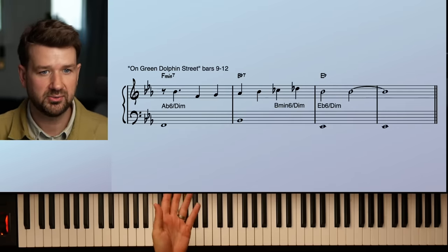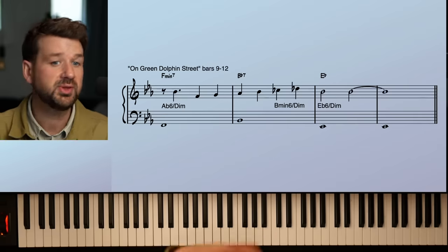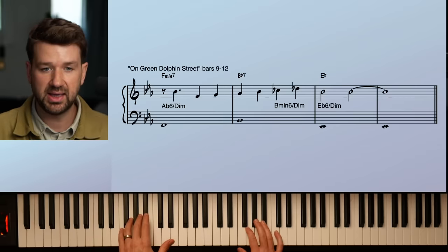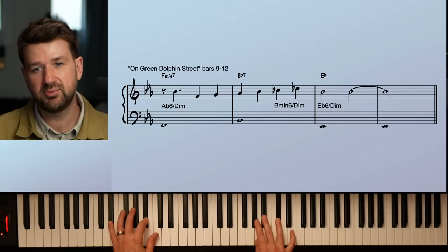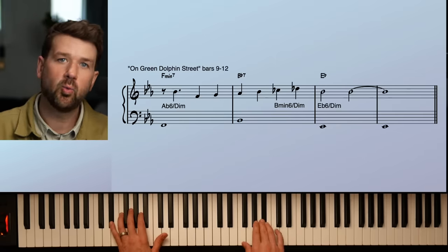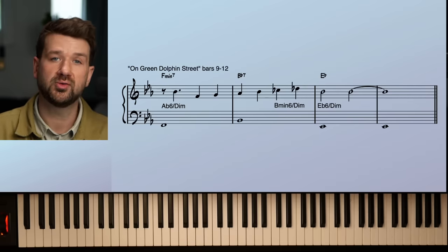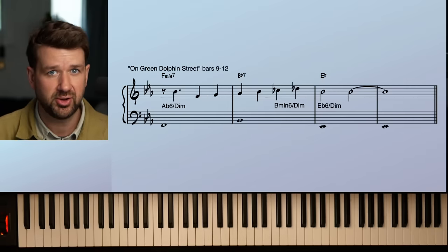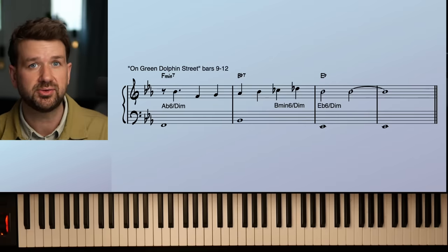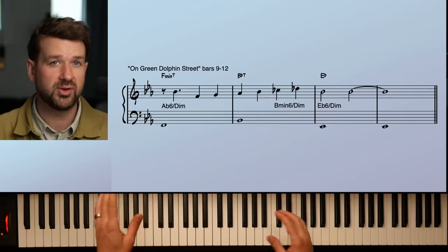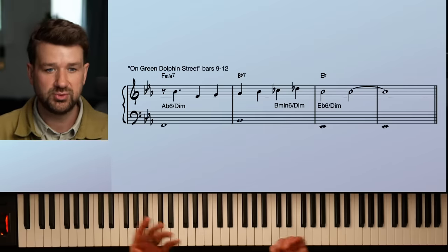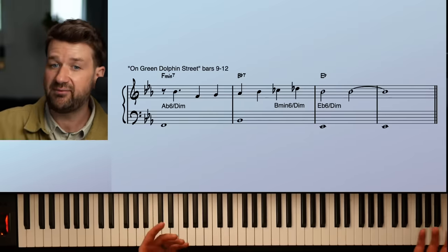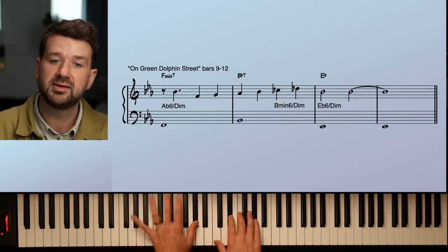So here are bars nine through 12 of On Green Dolphin Street, that first B section. We're in the key of E flat. If you don't play On Green Dolphin Street in the key of E flat, I encourage you to try it. It's a lot of fun. And it sounds like this, just melody root. Now, what we're going to be using today to build our chords are a couple of sixth diminished scales. The famous Barry Harris sixth diminished scale. We work on it all the time over here on Open Studio. You probably know what it is.